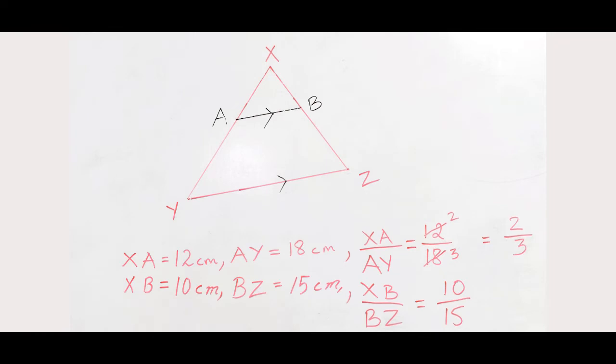And in the other ratio, XB by BZ, the HCF of 10 and 15 is 5. So if you divide 10 by 5, we will get 2. If you divide 15 by 5, we will get 3. So the ratio here also becomes 2 by 3. So in the simplest forms, we find that XA by AY is equal to XB by BZ.